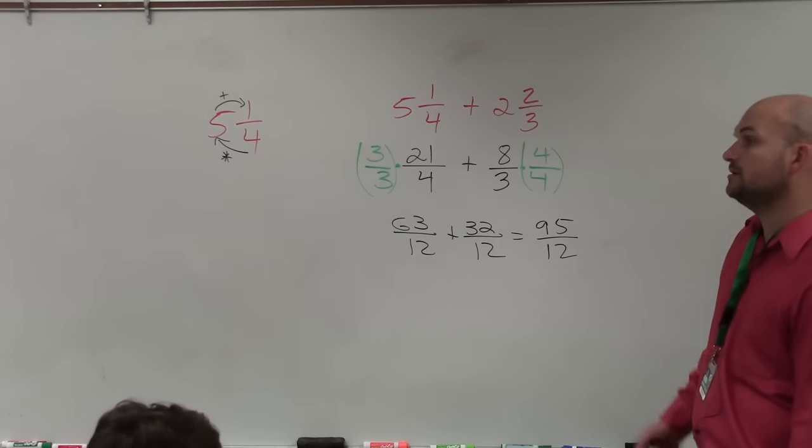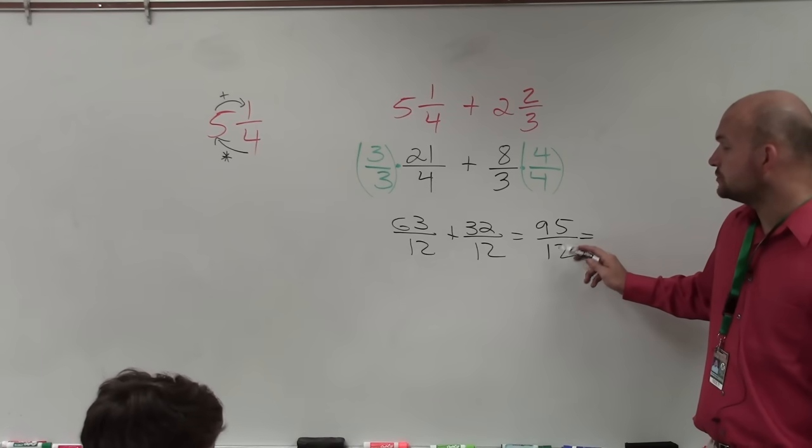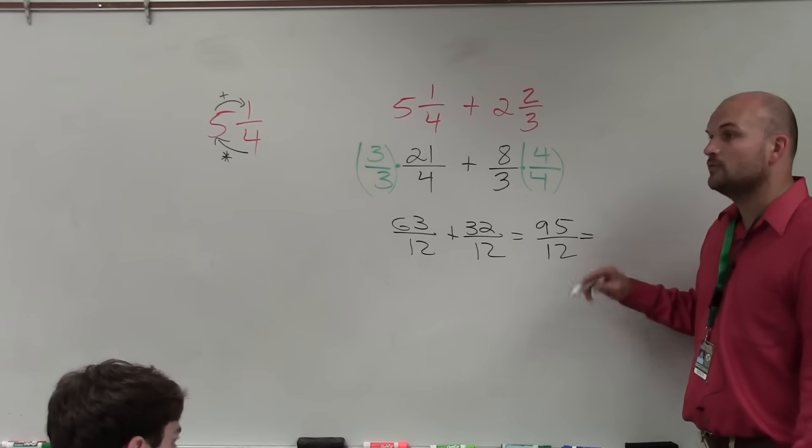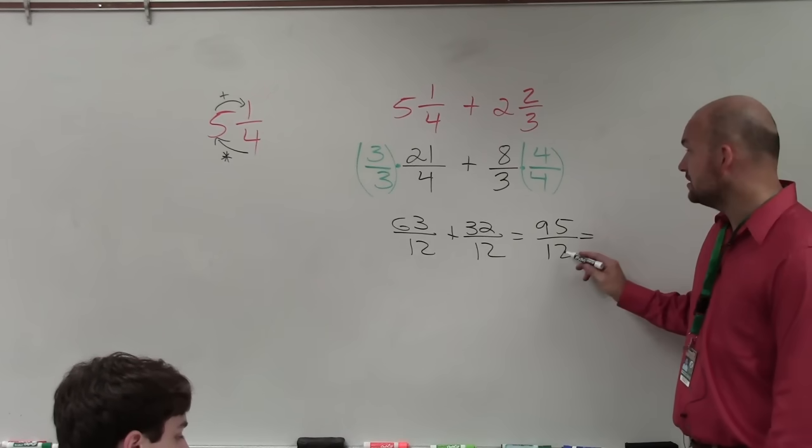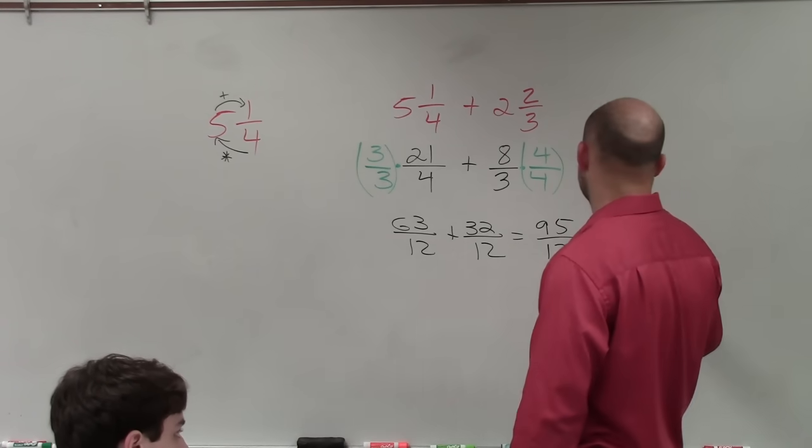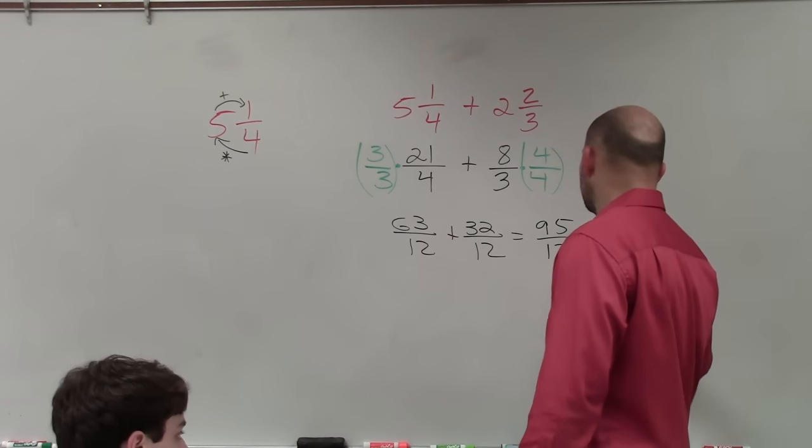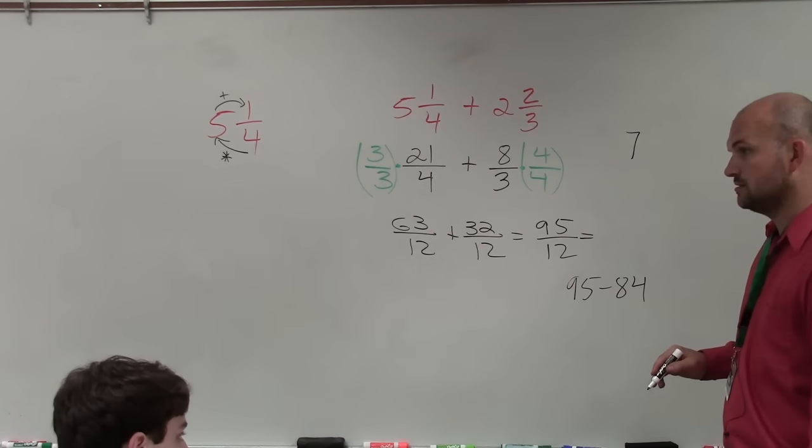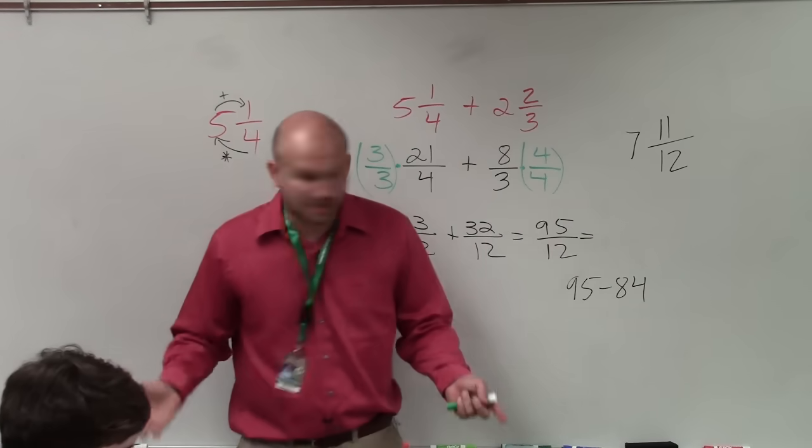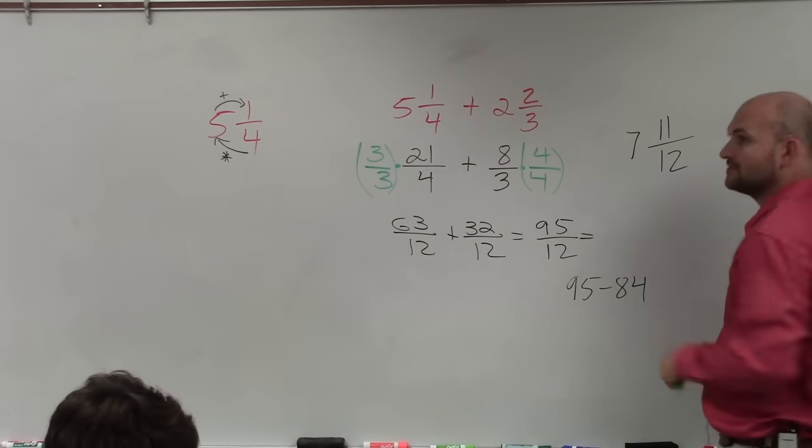If you want to put it back into a mixed number, yeah, absolutely. To do that, what you determine is divide 12 into 95. How many times does 12 go into 95 without a remainder? Seven times. Seven times 12 is going to be 84. So it goes in there seven times, and then you have 84, right? It goes in there 84, so then you subtract 95 minus 84, which is 11. So 11 would be your numerator over 12. And you can always check your work again. Seven times 12 is what? 84 plus 11 is 95.